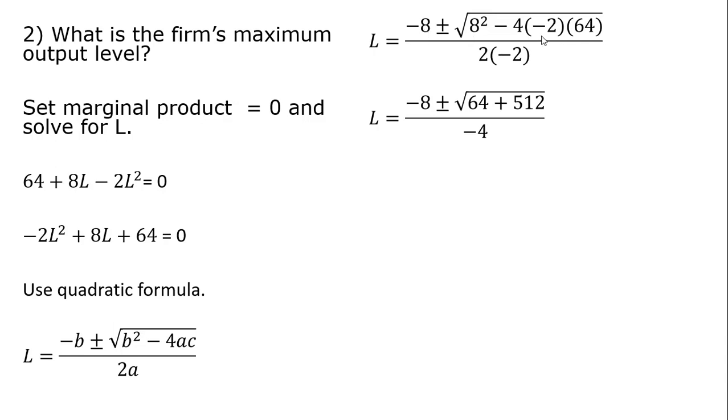So making those substitutions. B is 8. A is minus 2. And C is 64. And just simplifying here. 8 squared is 64. And then minus 4 times minus 2 times 64 is going to be plus 512. Adding what's together here under the square root symbol, we get 576. Taking the square root of 576, we get 24.